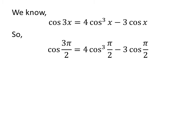Let us apply the above identity to the expression cos(3π/2). So cos(3π/2) = 4cos³(π/2) - 3cos(π/2).